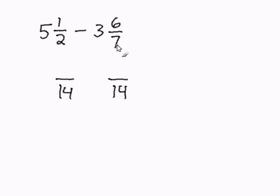I'm going to convert these two fractions into its higher equivalent form. 2 goes into 14 seven times, so I'm going to multiply the denominator and the numerator by 7. 1 times 7 is 7, and 2 times 7 is 14.